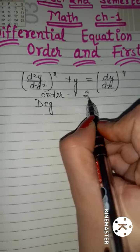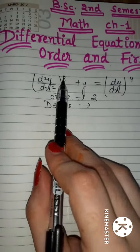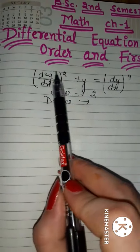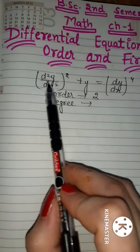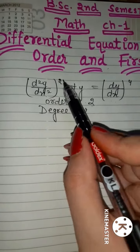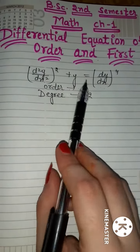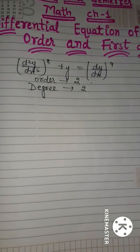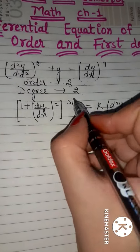Order 2 होगा। अगर degree की बात करें तो degree भी 2 होगी, क्योंकि highest derivative d²y/dx² है — वो order है — और highest derivative की power जो होगी वो degree होती है। इसकी power भी 2 है, तो इसकी degree भी 2 है। इस differential equation का order = 2 और degree = 2 है। I think आपकी समझ में आ गया होगा। Next question note करिए।